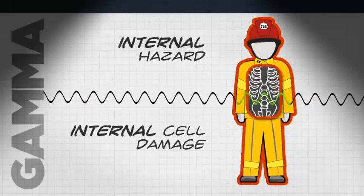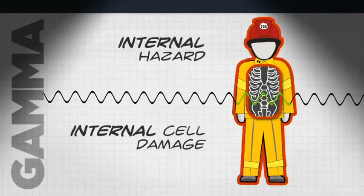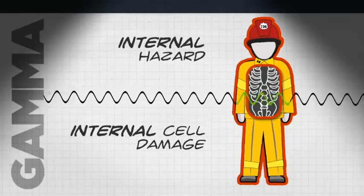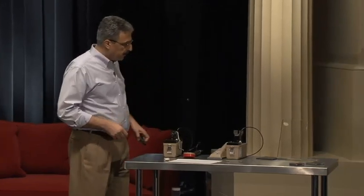But they also can be an internal hazard. If we ingest or inhale radioactive material that emits gamma rays, they could be exposing us to radiation from the inside. Now, detecting and differentiating alpha particles, beta particles, and gamma rays is actually fairly easy if you have the right instrumentation. I'm going to demonstrate that to you.